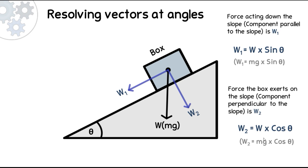This is useful because if a question only gives you the mass of the box, it is extremely important that you convert the mass to weight before resolving it, because it's impossible to resolve mass as it is a scalar. However, weight is a force, which is a vector, so you can resolve it. The mg formula is easier to use when you're given the mass of the box.